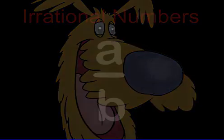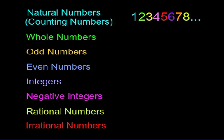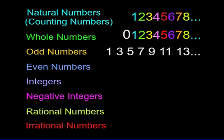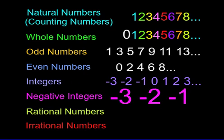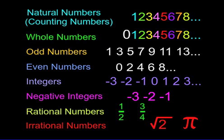Let's review the math terms we learned. There were natural numbers, or counting numbers, whole numbers, odd numbers, even numbers, integers, negative integers, rational numbers, and irrational numbers.